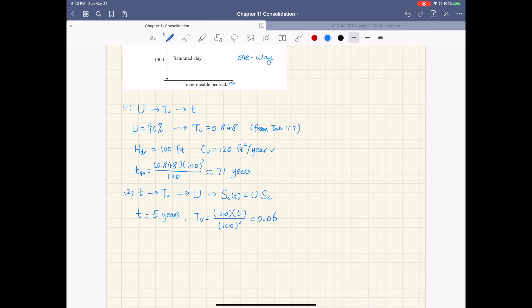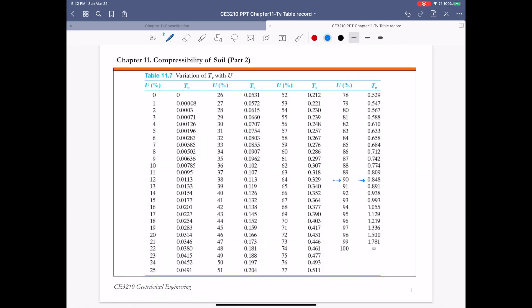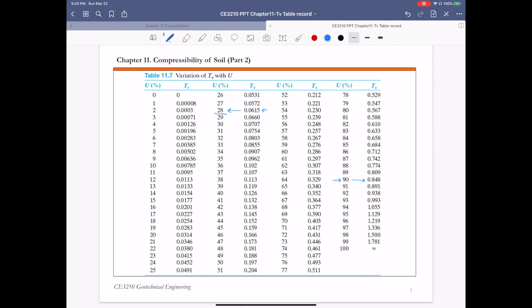And now again, we're going to use table 11.7. That's Terzaghi's solution. And for t sub v of 0.06, the corresponding average degree consolidation is about 28%. So U in this case is 28%. Again, this is from table 11.7.